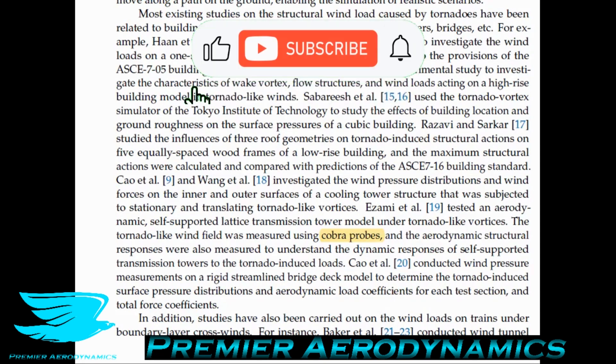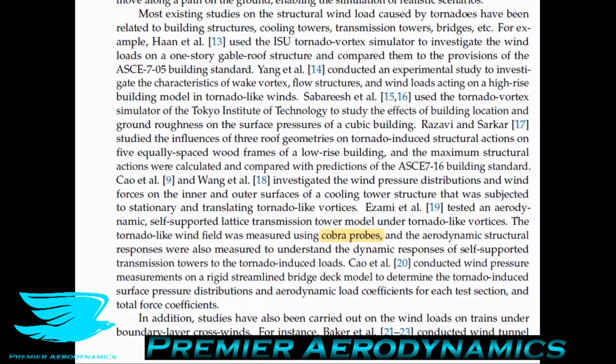One thing highlighted here is COBRA probes — a type of multi-hole pressure probe. COBRA probes are really cool and not too many people are familiar with them. Multi-hole pressure probes have multiple holes that allow you to measure pressure differences and determine velocity, decomposing it into three orthogonal components: U, V, and W. COBRA probes use only four holes yet still give you three orthogonal velocities, as long as the oncoming flow is within a 45-degree cone of the central axis. Having fewer holes makes the probe smaller.